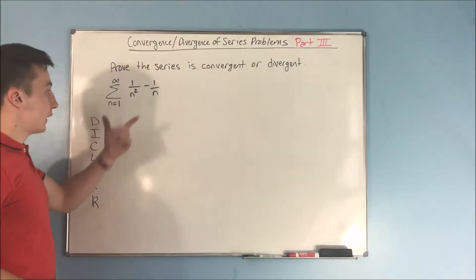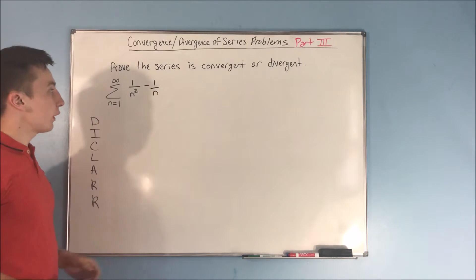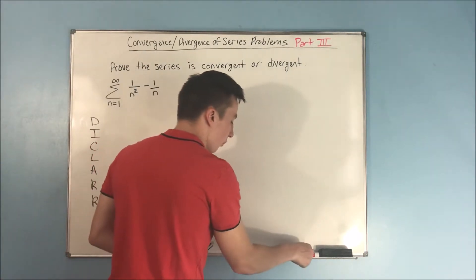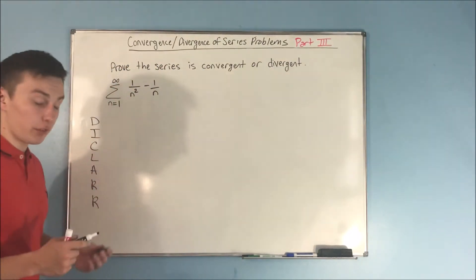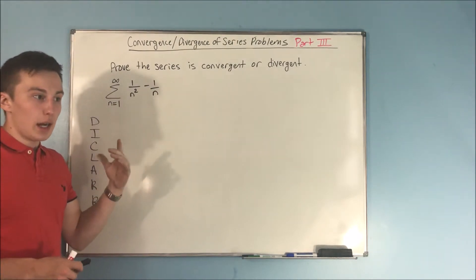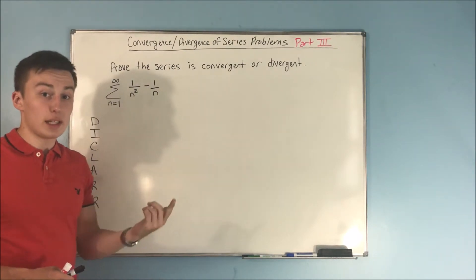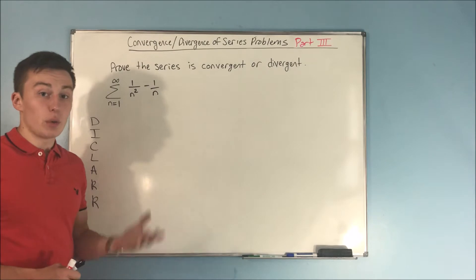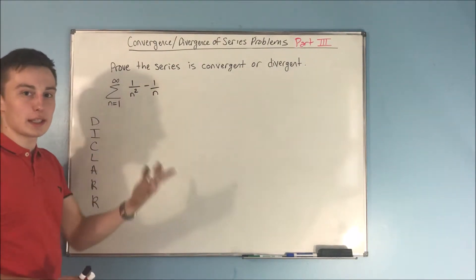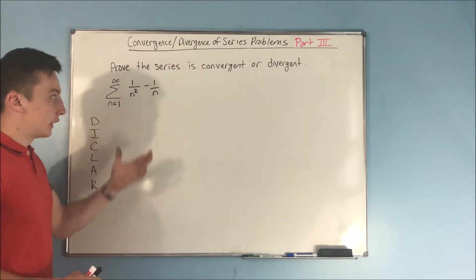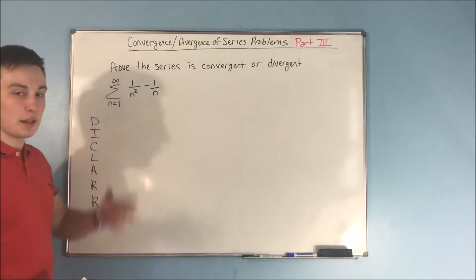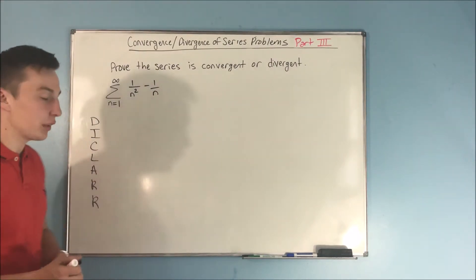Now, what about this series: the sum from n equals one to infinity of one over n squared minus one over n? As you do more of these, the test for divergence kind of flows through your head — the limit as n approaches infinity, one over n squared goes to zero and one over n goes to zero, so the test for divergence doesn't work here.